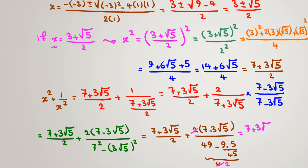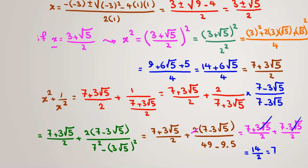Adding the two fractions: (7 plus 3 root 5) over 2 plus (7 minus 3 root 5) over 2. The root 5 terms cancel, giving 7 plus 7 equals 14, over 2, which equals 7. If we instead use x equals (3 minus root 5) over 2, the signs change but they cancel again, again giving 14 over 2, which is 7.